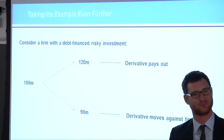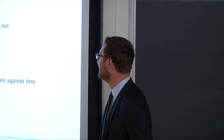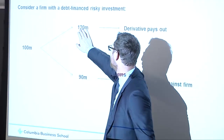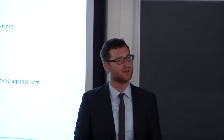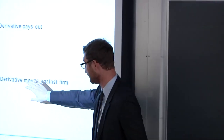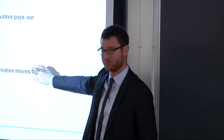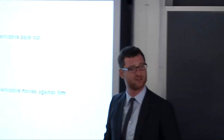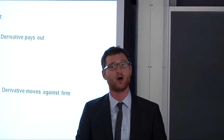Let me use the last few minutes to give you an even more extreme example illustrating an additional danger of the current regime. Same firm: $100 million invested, payoffs of $120 or $90 million, but now I've changed the derivative. Assume the firm also has access to a derivative that always pays out in the good state but never pays out in the bad state. Remember, a derivative with hedging value should pay out in the bad state. This derivative does nothing for hedging, and the firm should never use it if derivatives are costly.